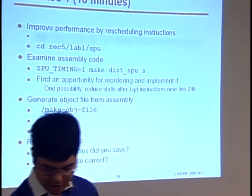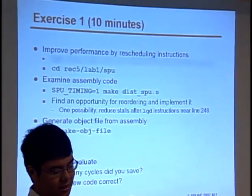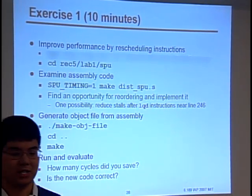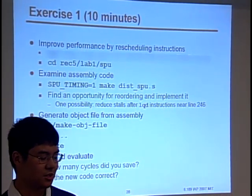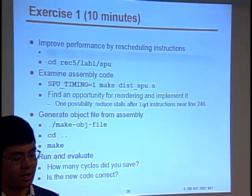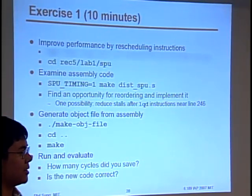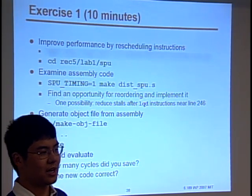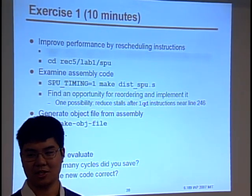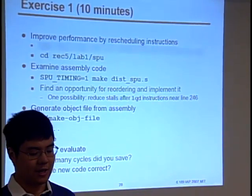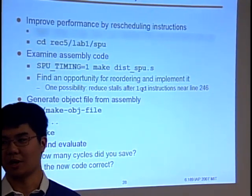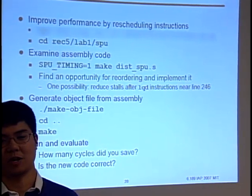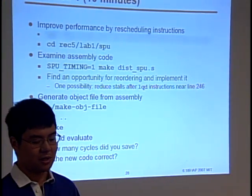For the exercise right now, we're going to try to improve performance by rescheduling instructions. Download the tarball and you'll get the exact same file I was working on. What we're going to have you do is generate the assembly, practice modifying it, and then continue with the rest of the build process to get a new object file based on your modified assembly. You just need to find one opportunity for optimization — you can do the exact same thing I did if you want.